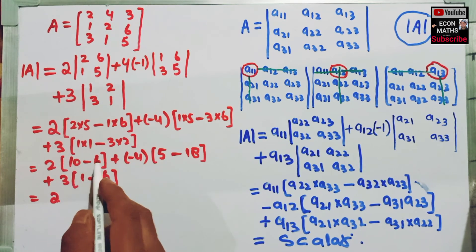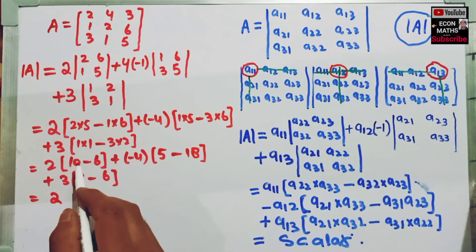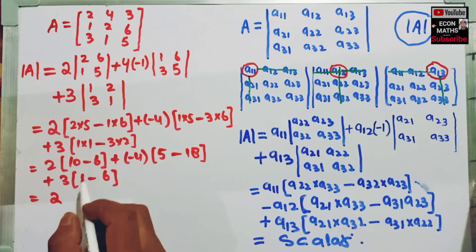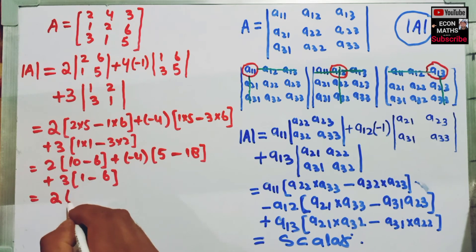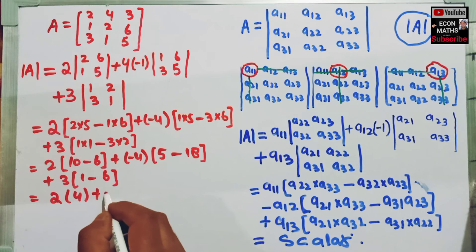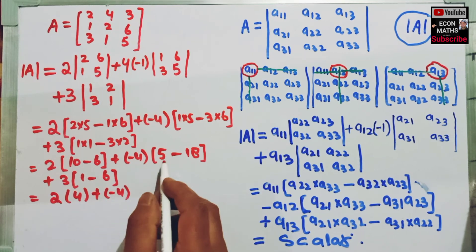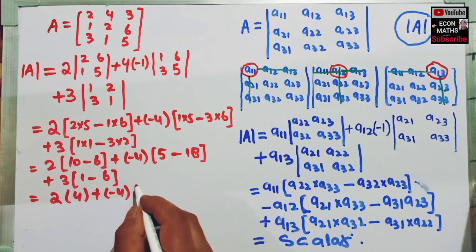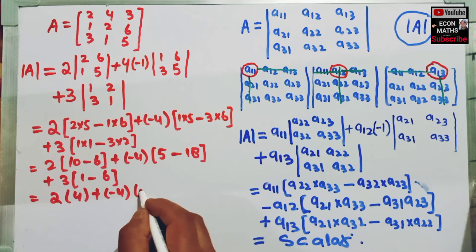So, 10 minus 6 is 4. Plus minus 4, and 5 minus 18 is minus 13.